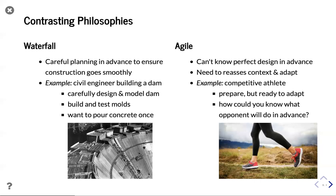On the other hand, there's an agile philosophy. That mentality says: I can't know the perfect design in advance — how could I possibly know that before I started? I need to instead embrace the notion of constantly reassessing and adapting. As an example, imagine you're a competitive athlete. You can do everything to prepare — get in great shape, practice, train teammates — but at competition you can't control everything. You don't know what your opponent is going to do, so you need to be ready to adapt and adjust on the fly. These are two exaggerated caricatures of philosophies, but they do flavor the conversation.